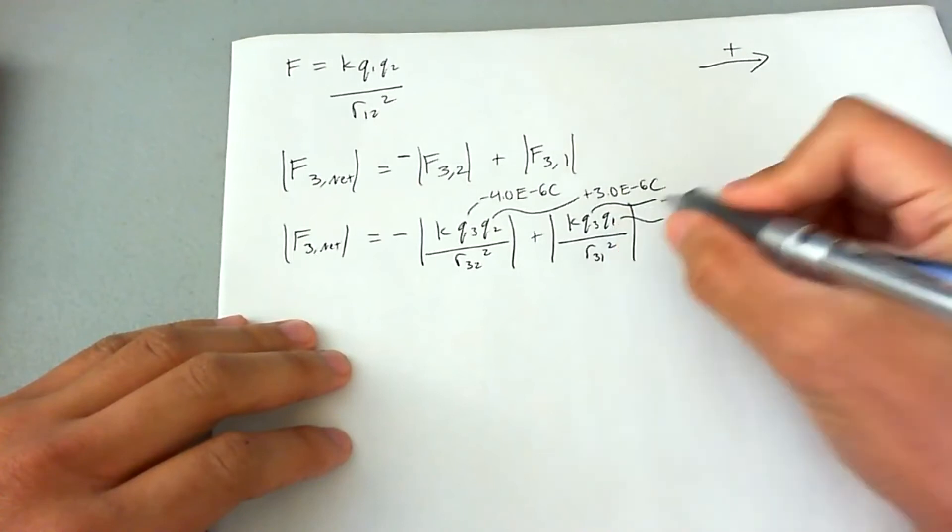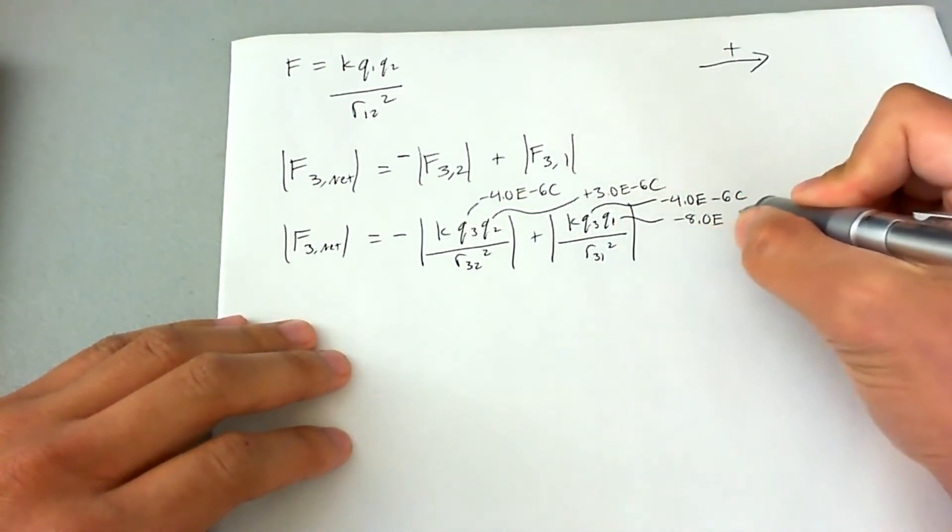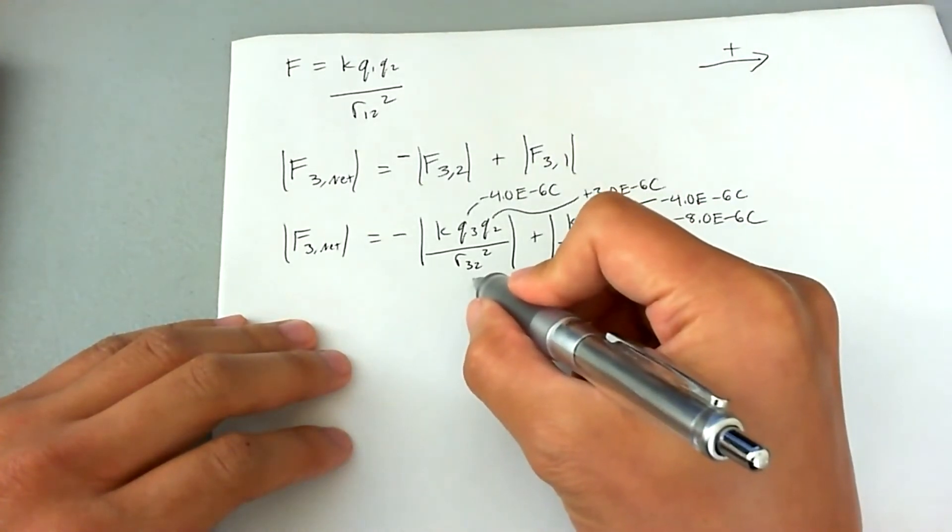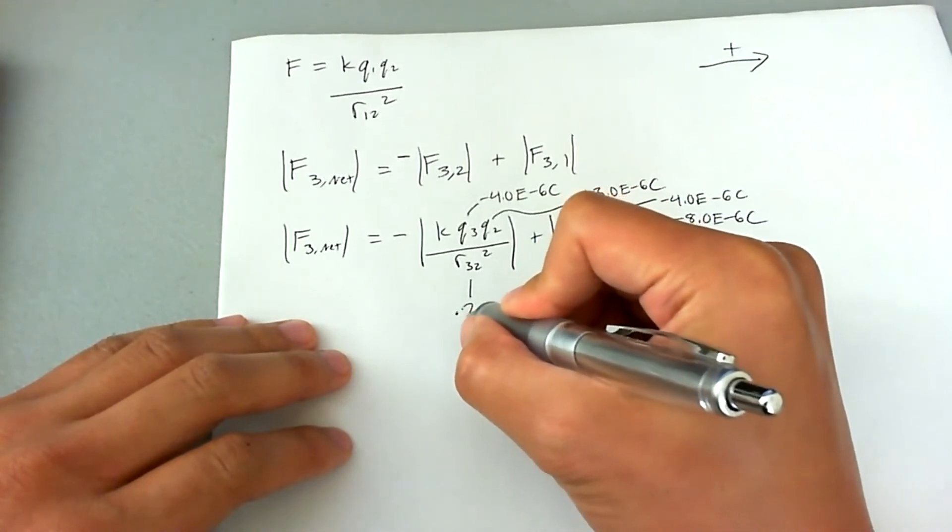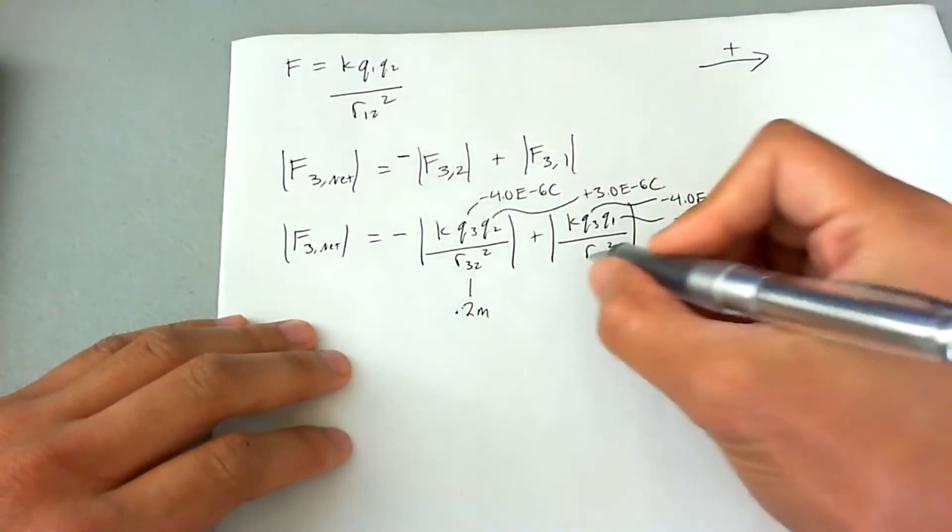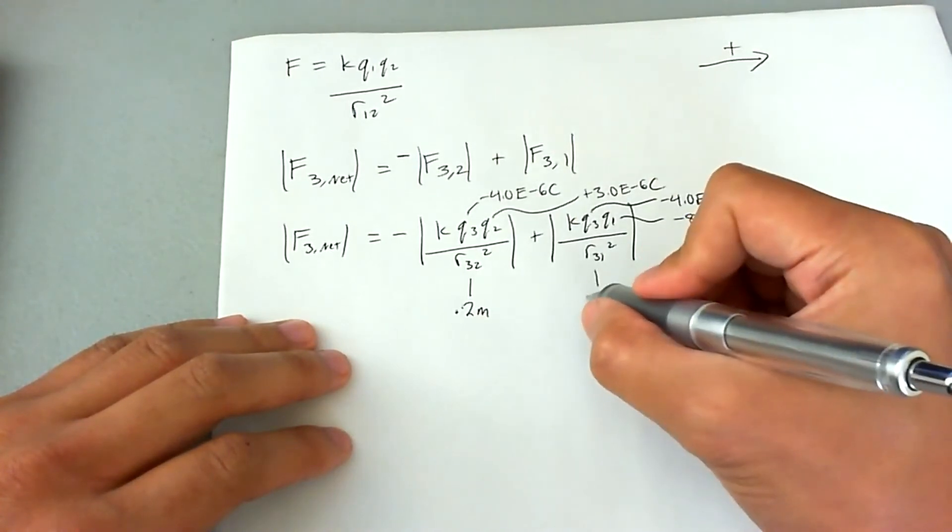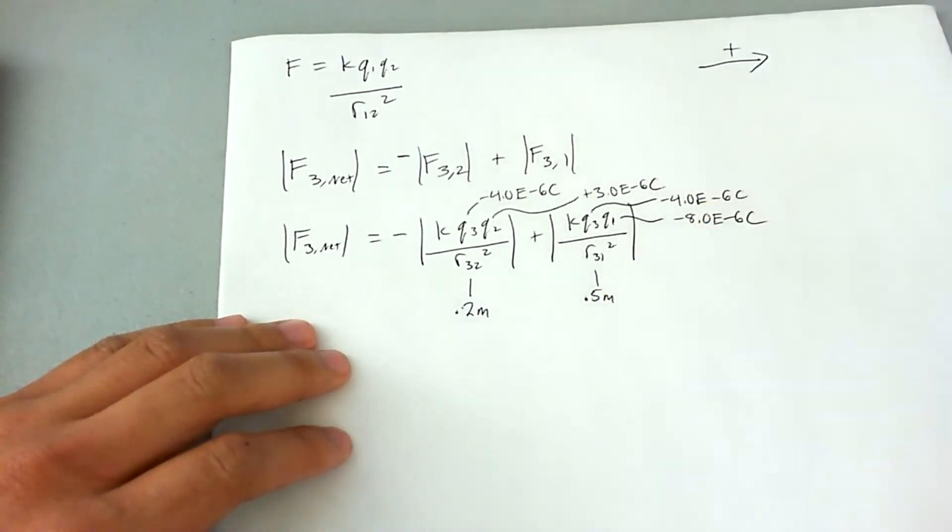And then q1 is going to be negative 8.0 times 10 to the negative 6 coulombs. The distance between charge 3 and charge 2 is 0.2 meters. And the distance between charge 3 and charge 1 is 0.2 plus 0.3 meters as given in the problem, so 0.5 meters.